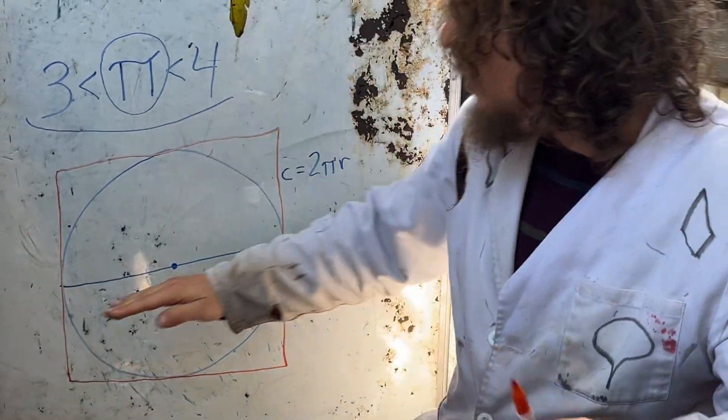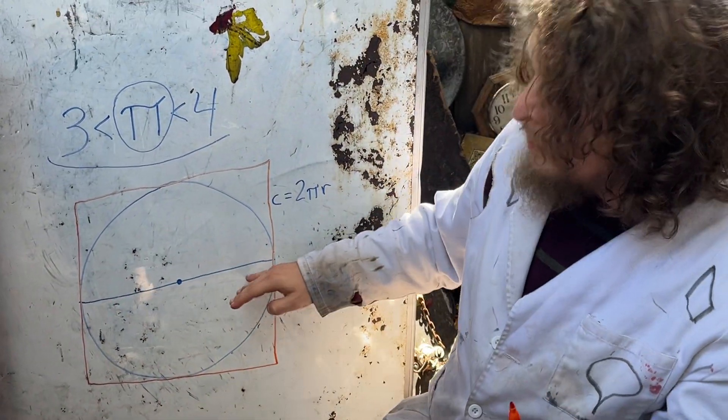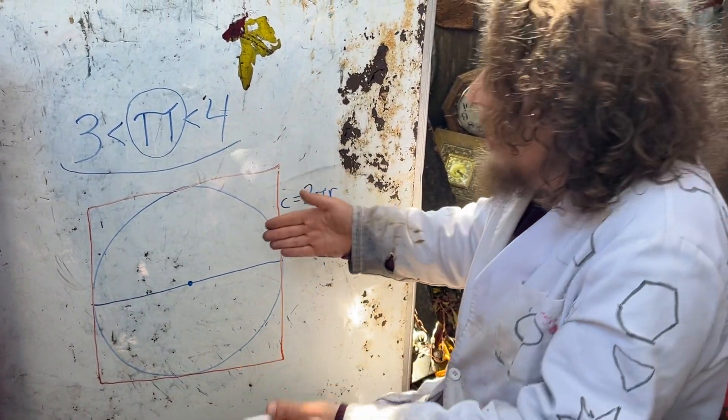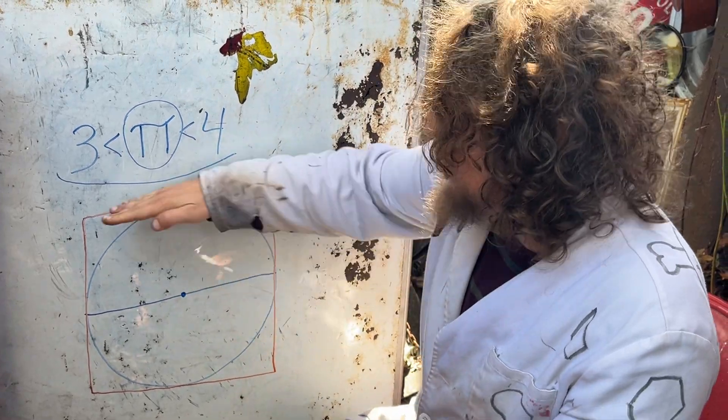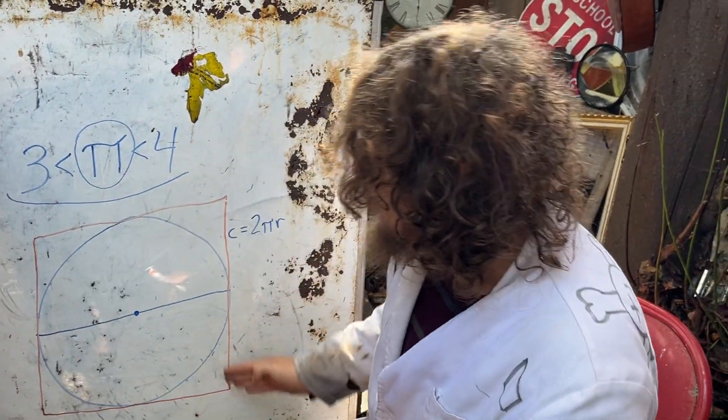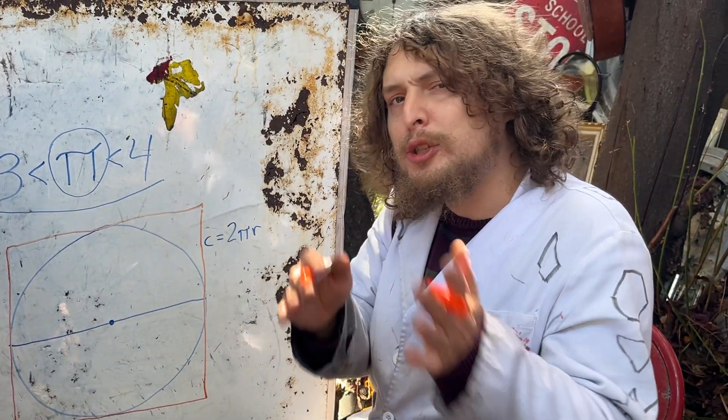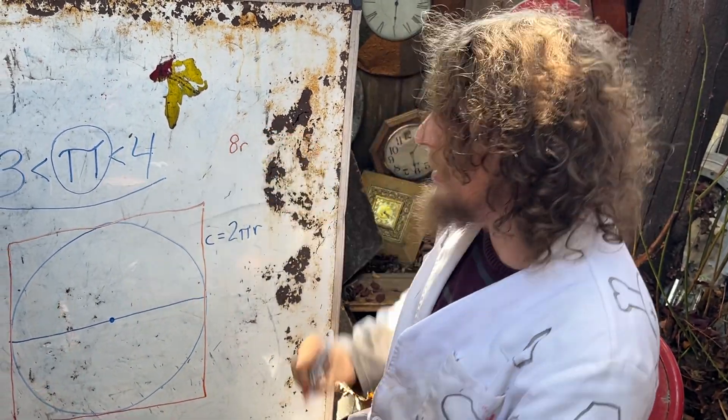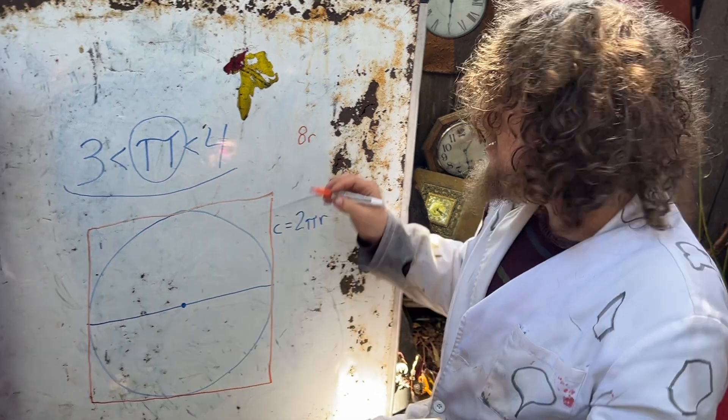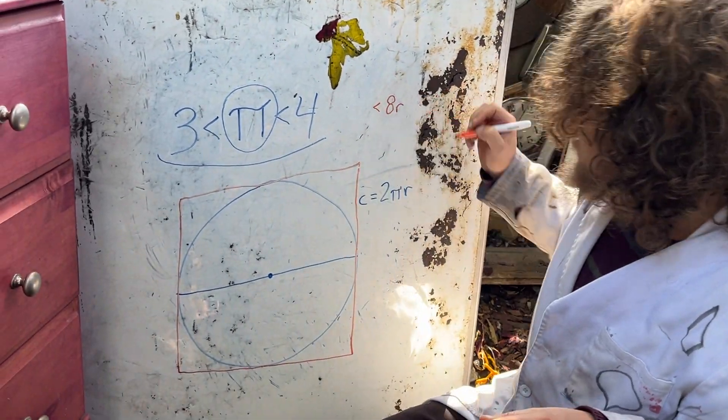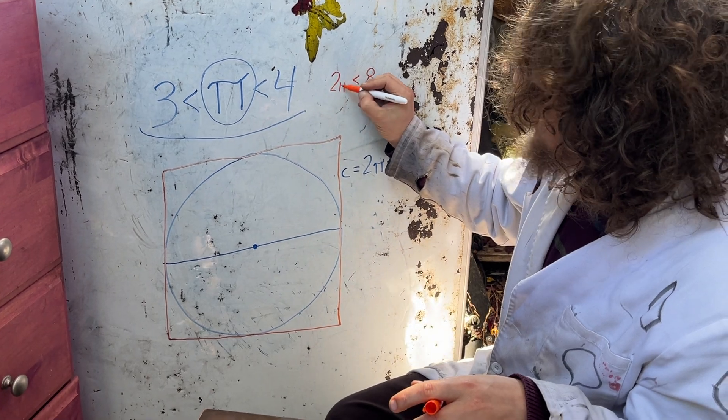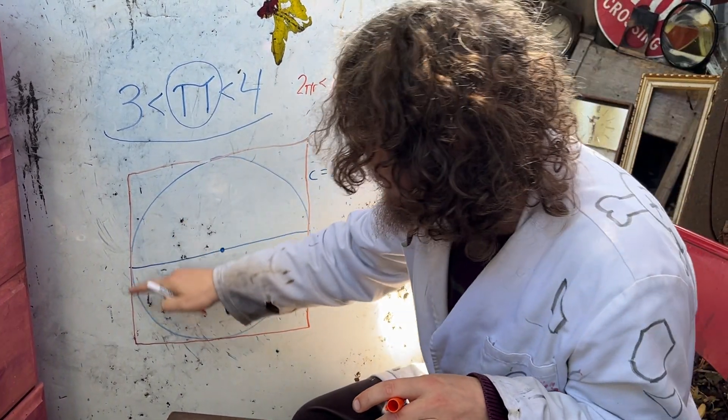And we can note that this diameter is exactly equal to the side length there. So this square has 2r per side and four sides, making its perimeter equal to eight times that radius. And we know that that is larger than 2πr, which is how much the circle was around.